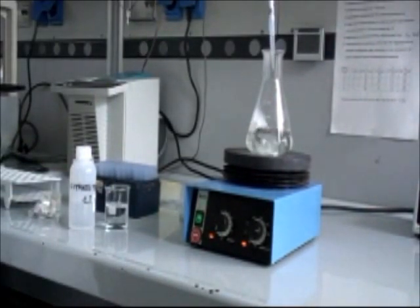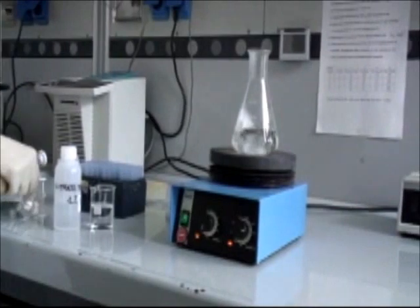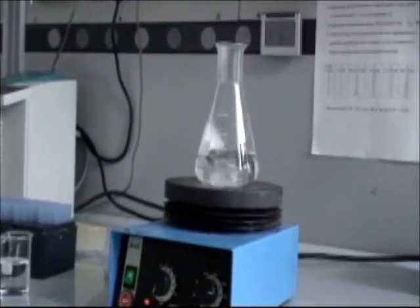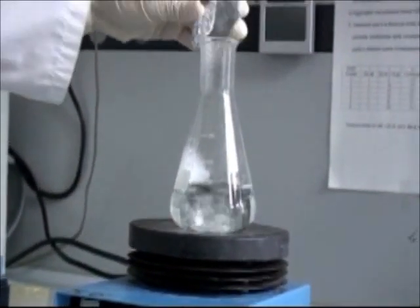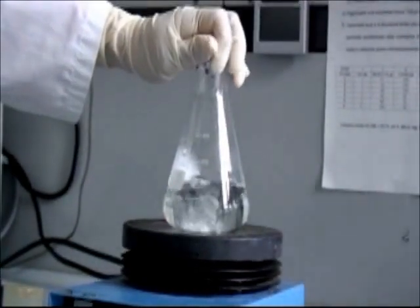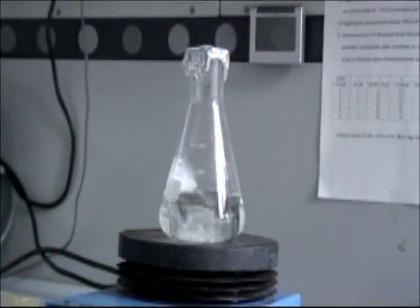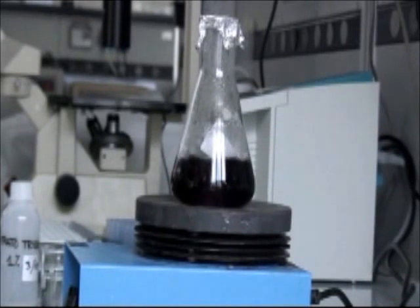The solution of chloroauric acid is heated under stirring conditions and when it reaches the boiling point, citrate is added. After a while the solution turns from dark blue to cherry red.